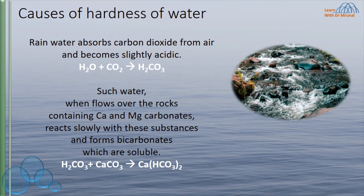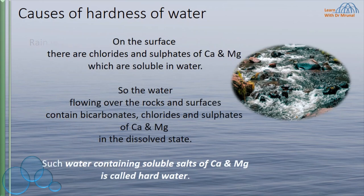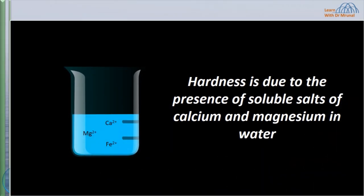In this way, calcium salts get dissolved in water. On the surface, there are chlorides and sulfates of calcium and magnesium which are soluble in water. So water flowing over rocks and surfaces contains bicarbonates, chlorides, and sulfates of calcium and magnesium in dissolved state. Such water containing soluble salts of calcium and magnesium is called hard water. The hardness is mainly due to the presence of soluble salts of calcium and magnesium in water.